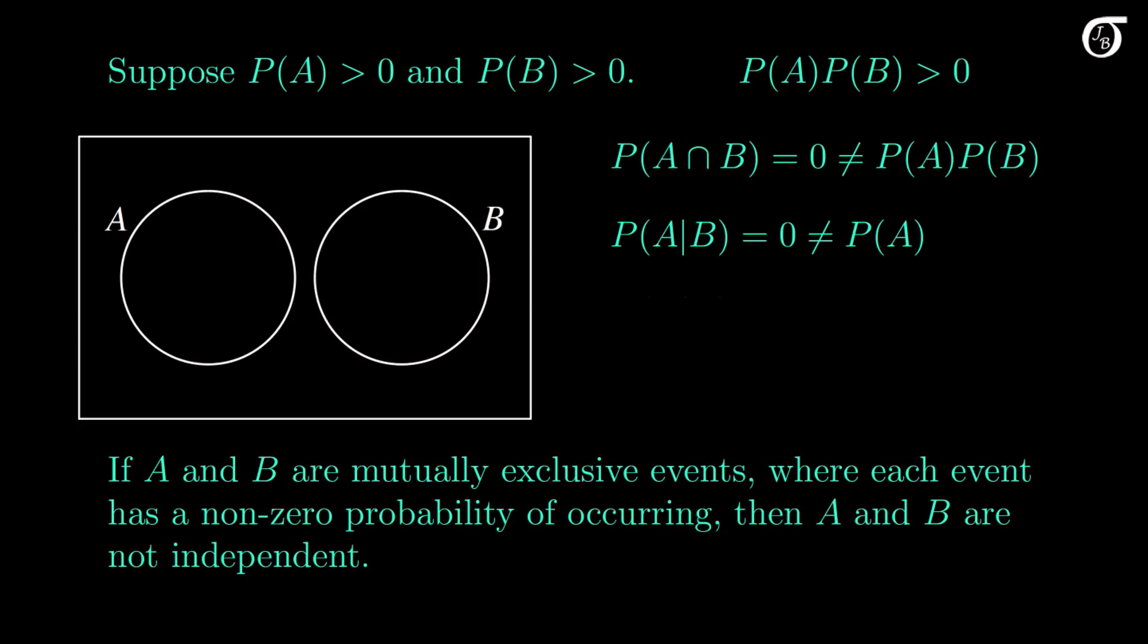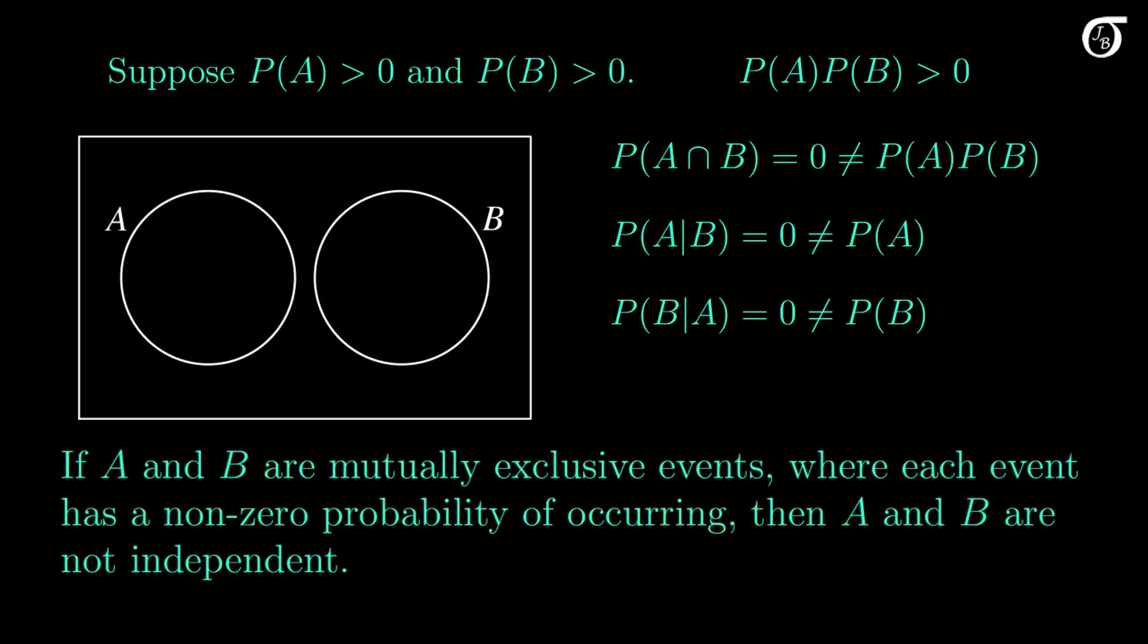And of course we could easily switch B and A around, and make the same argument with the conditional probability of B given A. If we are in circle A, then we cannot be in circle B, and thus the probability of B given A is 0. And we could have used any one of these three statements to draw this conclusion.